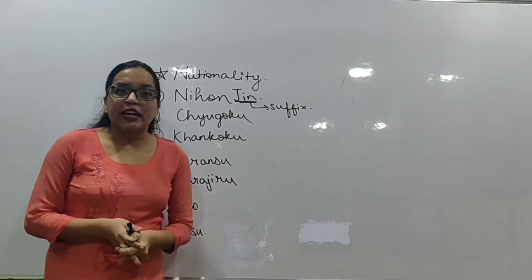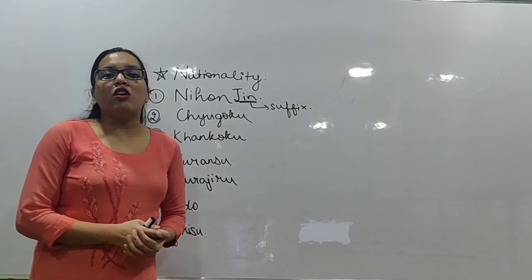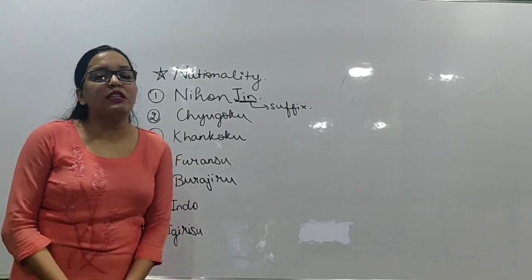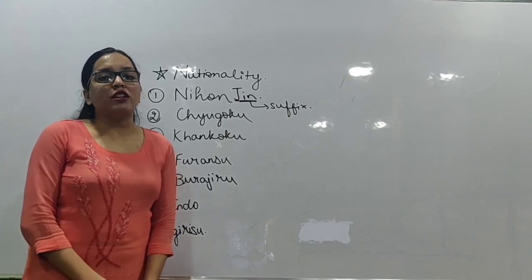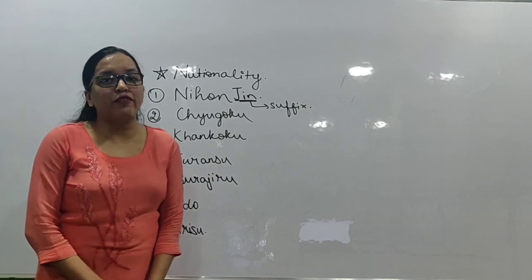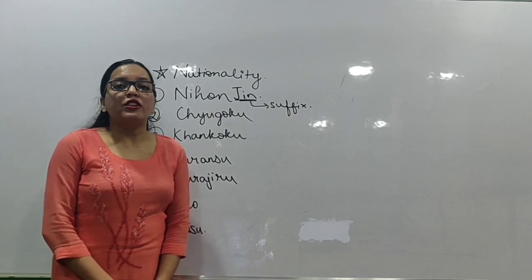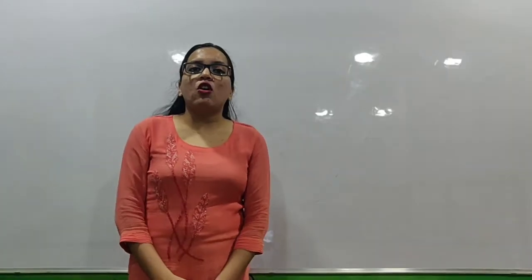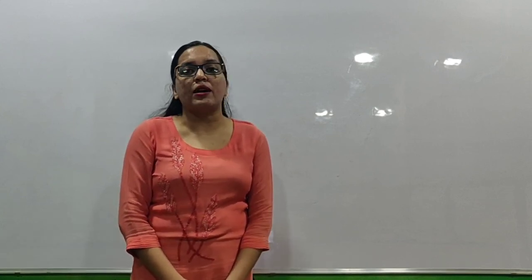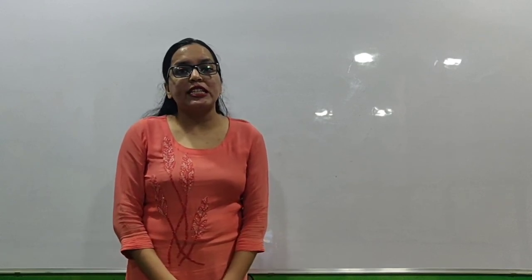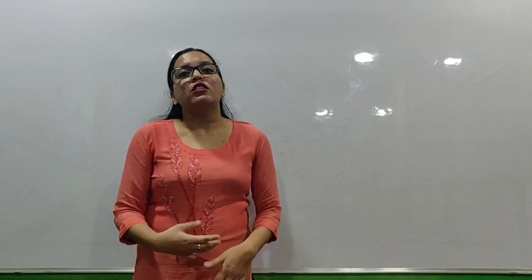To summarize: for nationality, put 'Jin' after each country name. For language, put 'Go' after the country name — with the exception of Indo and Igirisu for the language suffix. All other countries we will learn in coming sessions will follow the same rules. In upcoming sessions, we will also learn more about Japanese language and culture.